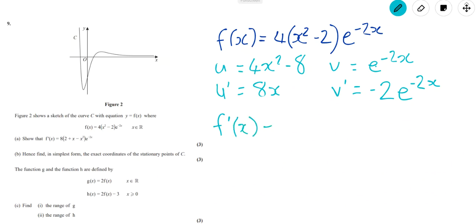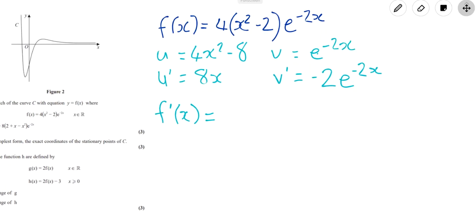Good, now we can put these together and use the product rule to get f dash of x. So we're going to do u times v dash plus v times u dash. So I'm going to put the v dash first here and put it at the front of these brackets. I'm doing v dash times u, putting that in a bracket.